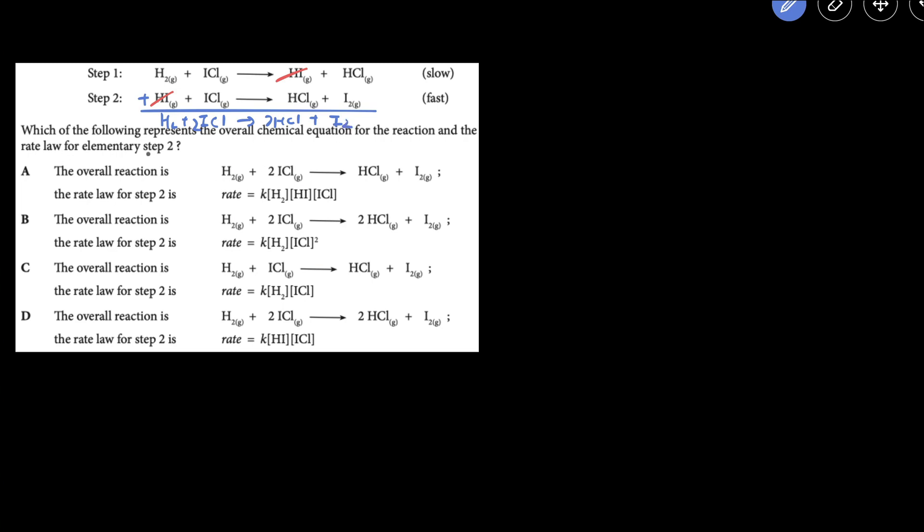Now the rate law for the elementary step two, so we just got to figure out the rate law for step two. To do that, we just look at the reactants for step two. You can write rate equals the rate constant K times the concentration of the reactants in step two, which are HI and ICL. For elementary steps or the individual steps in the mechanism, the coefficient becomes the order. So the order of HI would just be one because this has a coefficient of one, and the order of ICL is also one because that's a coefficient of one. So that would be the rate law of step two.